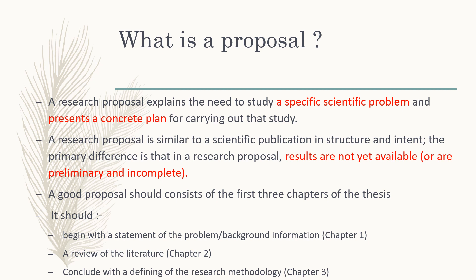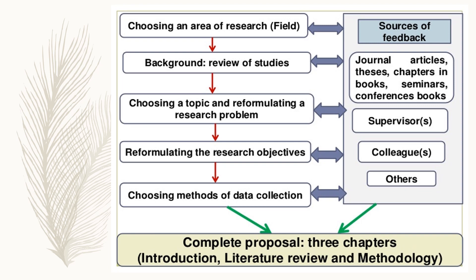In a good proposal, you should write the first three chapters of the thesis. The first three chapters are: you have to start off with the statement of the problem or background information in chapter one, then you have a review of literature in chapter two, and you conclude with defining the research methodology in chapter three. These are the flowchart of a complete proposal, which consists of three chapters: introduction, literature review, and methodology.